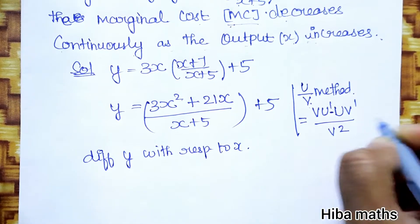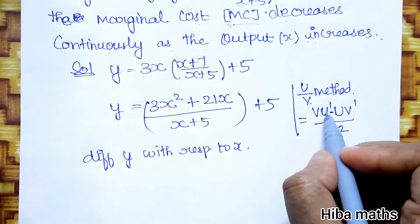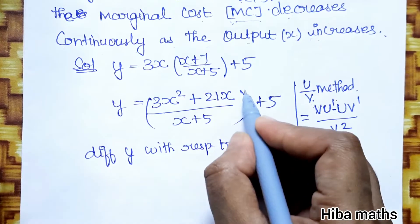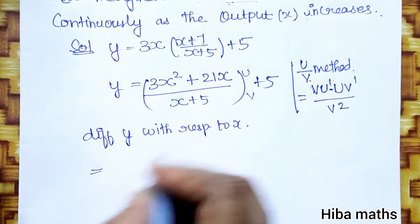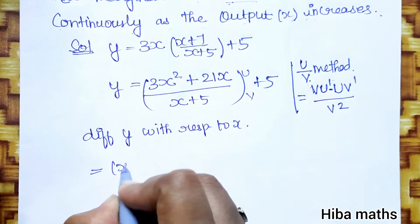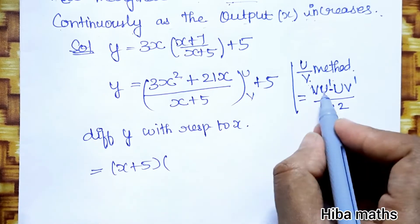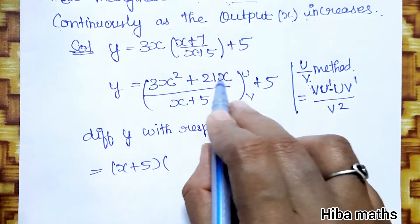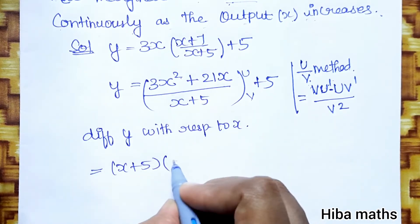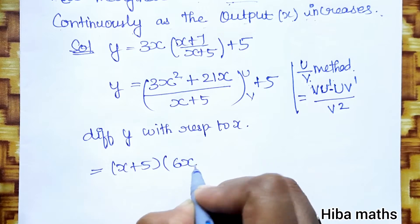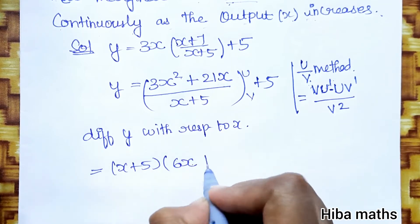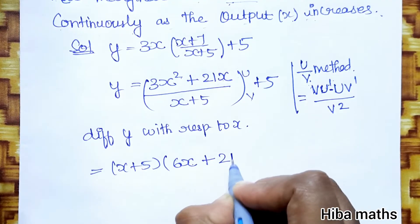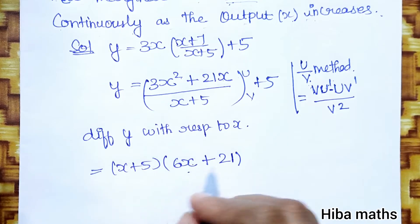Differentiating u, where u equals 3x squared plus 21x and v equals x plus 5. So u' is the derivative of 3x squared plus 21x, which gives 6x plus 21, and v' is 1.